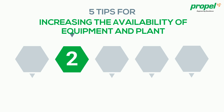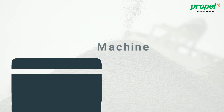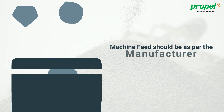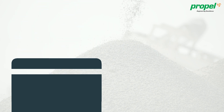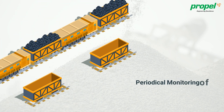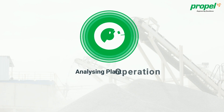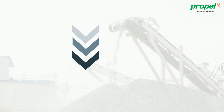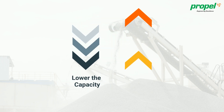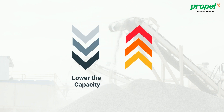Number 2: Capacity Monitoring and Analysis. Remember that feed to the machine should be as per the manufacturer standards. It is important to monitor and analyze tons per hour (TPH) periodically to check if the plant is in accordance with the plant rated capacity. In case the plant is running with lower capacity or TPH, then it would result in higher operational cost per tonne.